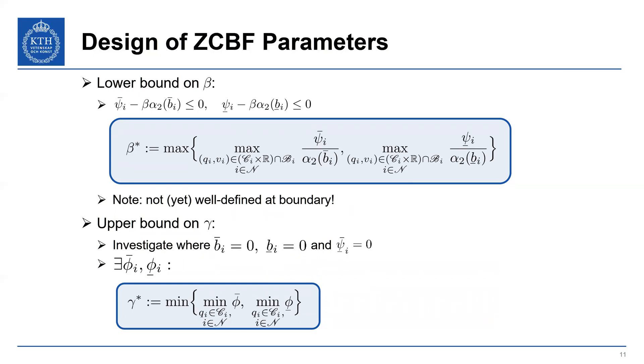because b, as we define our set, is zero at the boundary. So basically, this explodes. So we don't have a well-defined lower bound on our design parameter. But there's something we can do. In fact, if we investigate the case where b_i is equal to zero, which is the boundary of our set, we can actually then set psi_i equal to zero. And what we want to do is actually force psi_i to be strictly negative.